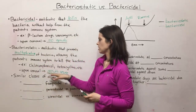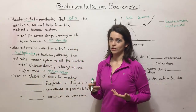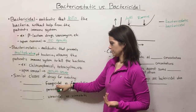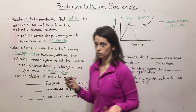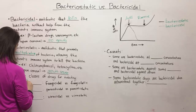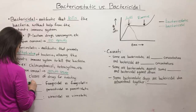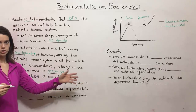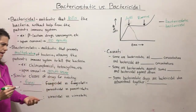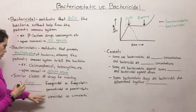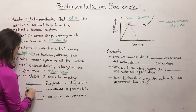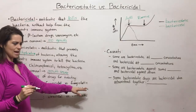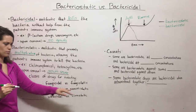Let's also talk about similar classes of drugs for treating other kinds of pathogens. For fungi, there are fungicidal drugs and fungistatic drugs — fungicidal kills the fungal cells, while fungistatic just prevents their growth so the immune system can take care of the problem. For treating parasites, we have parasiticidal versus parasitostatic: one kills the parasite, the other prevents the parasite from multiplying.